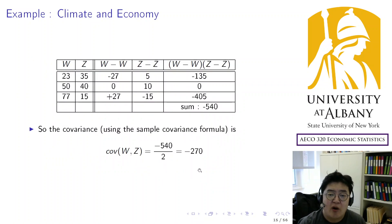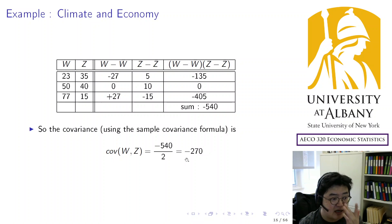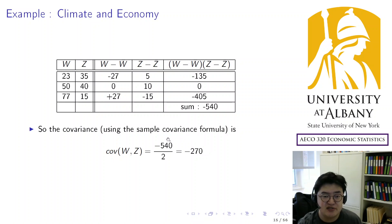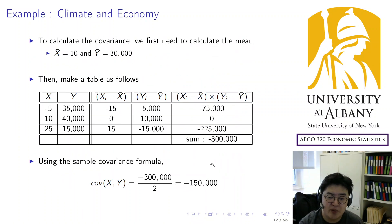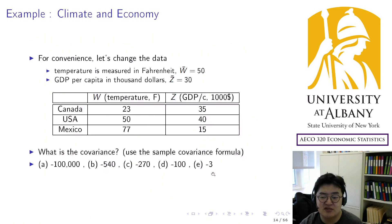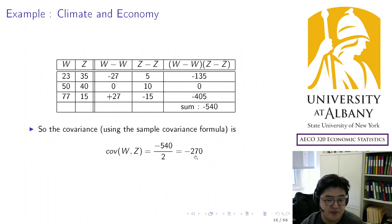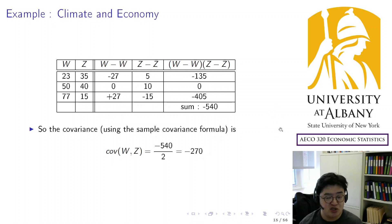What you see here is weird, because we said we are working on the same data. The only difference is I changed Celsius to Fahrenheit and dollars to thousand dollars, but basically the same data — yet the covariance changes a lot. Here minus 150,000 now becomes minus 270. Good news is the sign is the same. The sign does not change because that's the direction of the relationship, which should be the same.